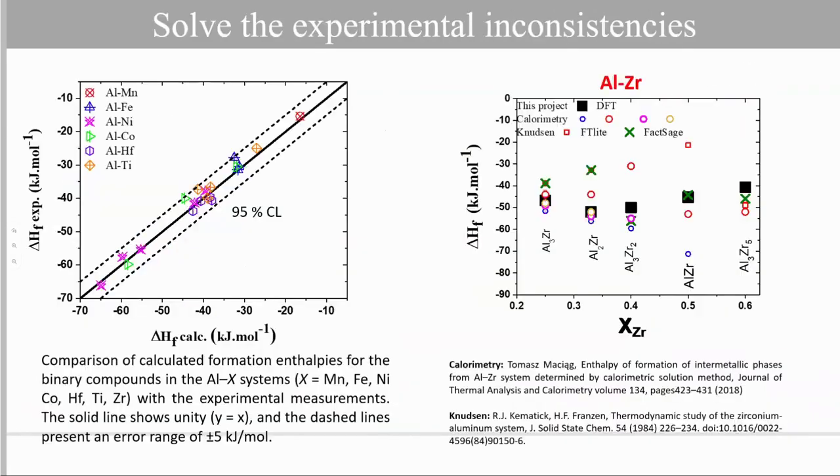The enthalpy of formation can be used also to solve some experimental inconsistency. As you can see, for example, in the aluminum-zirconium system, we observe a large dispersion of different types of experimental data, even between the same experimental methods. So in this case, density functional theory can be used to overcome these inconsistencies.